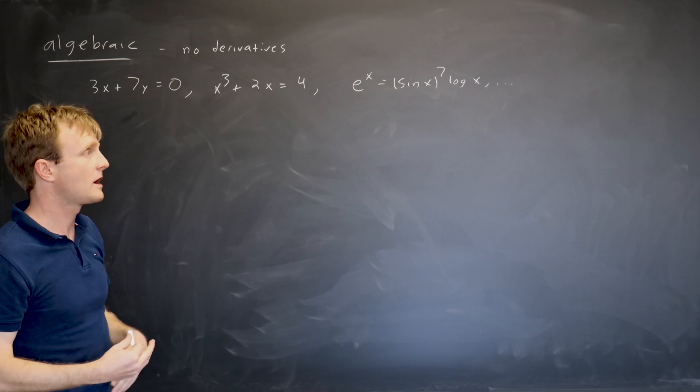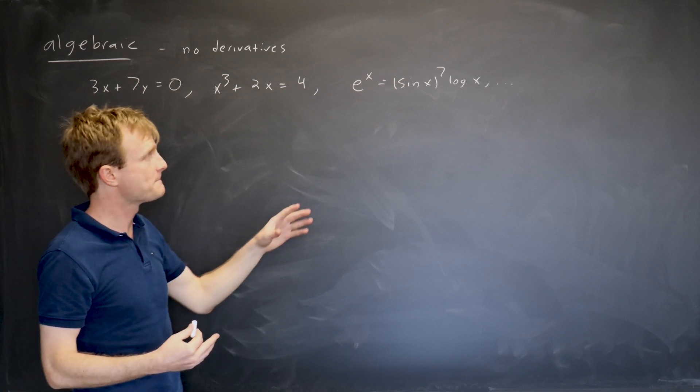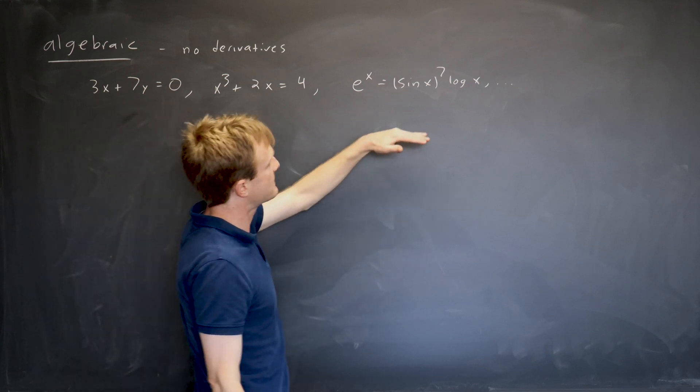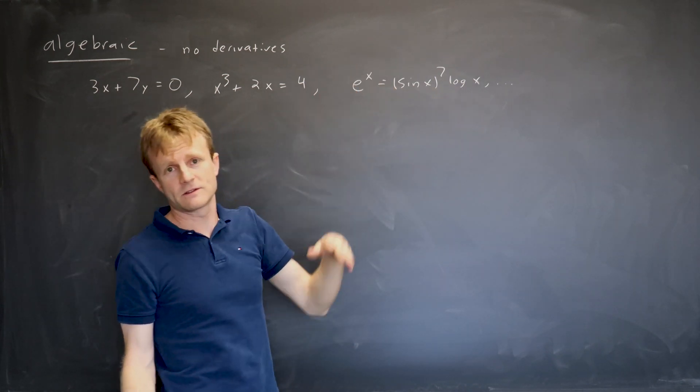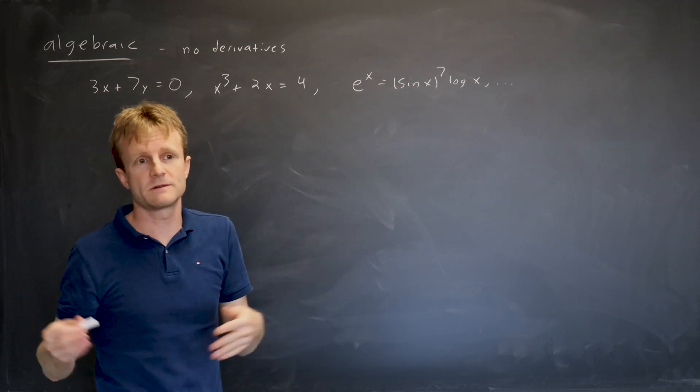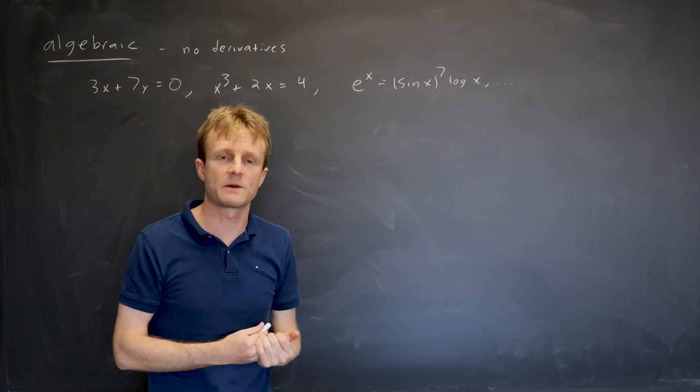Polynomials, again, you know how many solutions, you can solve them, sometimes not in closed form, but at least you know the solutions exist. And then for transcendental equations like this, all bets are off. There might be no solutions, there might be a hundred, there might be infinitely many, you just solve each one separately.